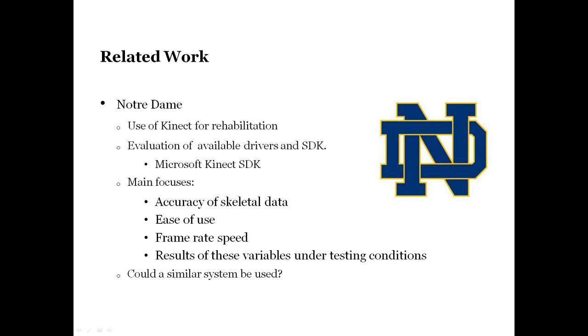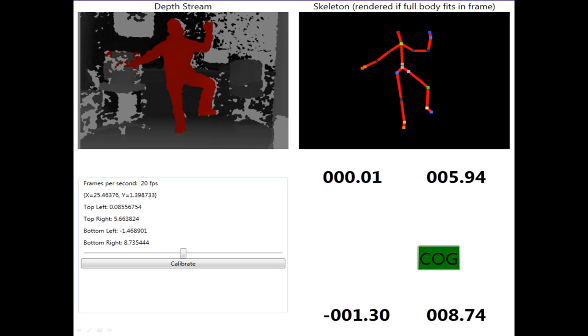So a question that kind of arose from this that they kind of left and that we're going to try and answer is, could a similar system be used in the future for rehabilitation purposes? And here is a sample screenshot from their program. You can see the depth data at the top. You can also see the skeleton data on the top right. And you can see the 20 points are what they call joints that it tracks, which is basically a vector in space. It has X, Y, and Z position out in space. And you can see they tracked the frames per second. They had a way that you can calibrate it, and they showed the other positions in space as well.